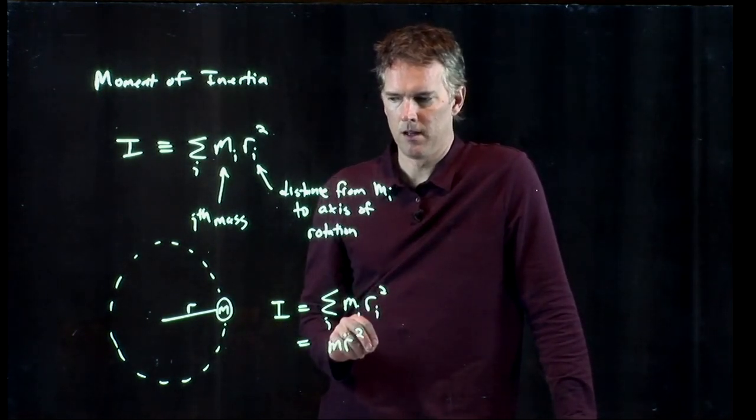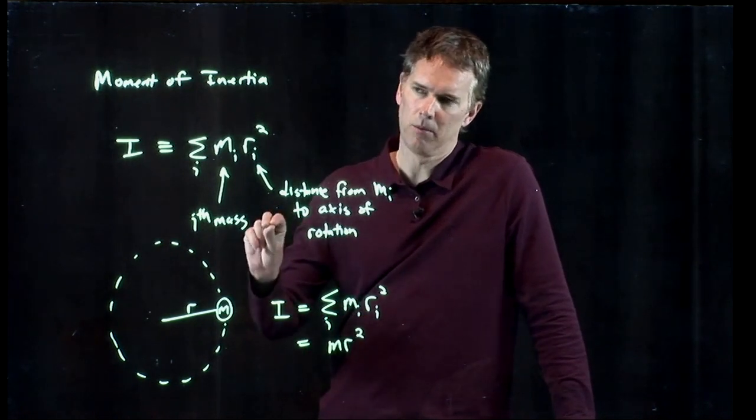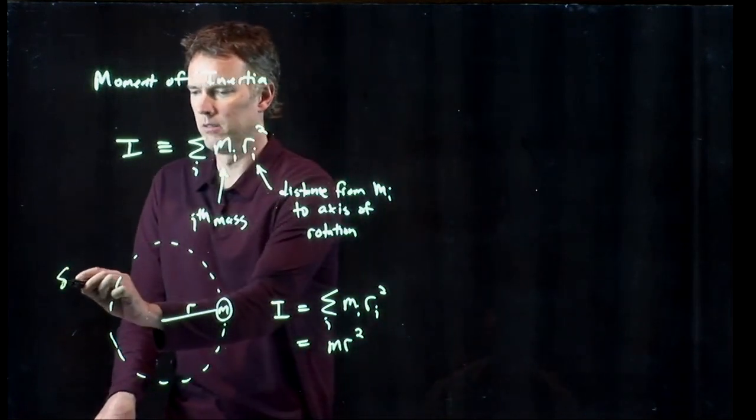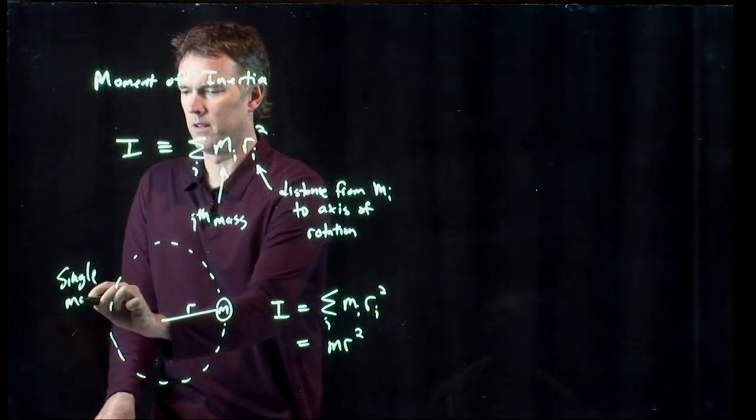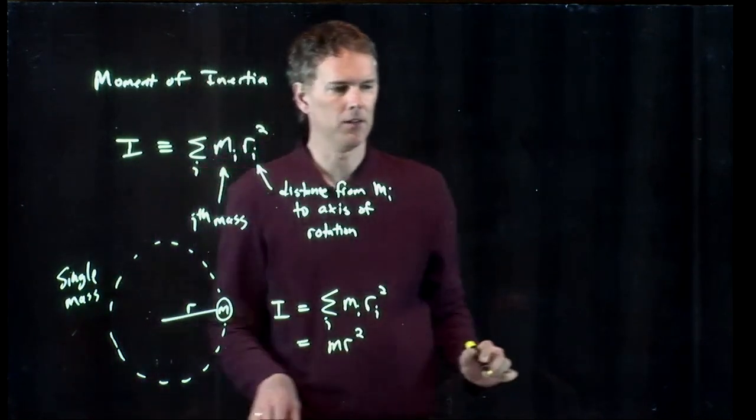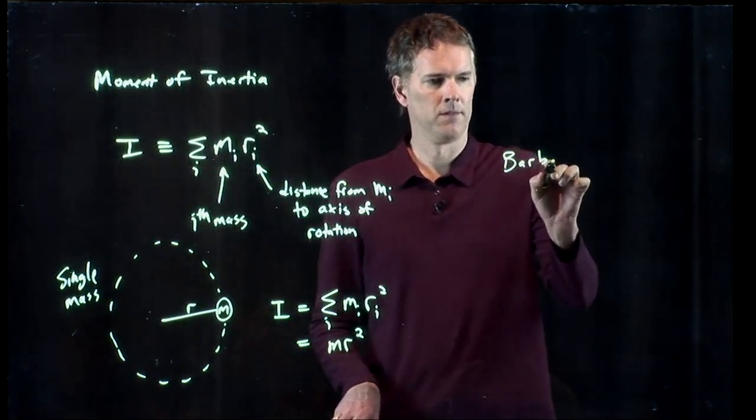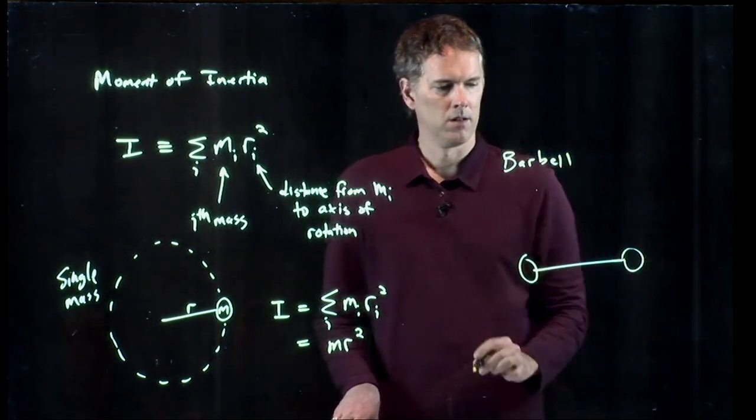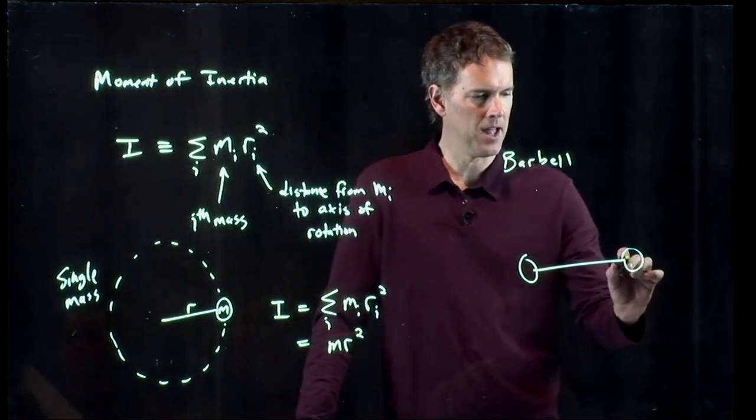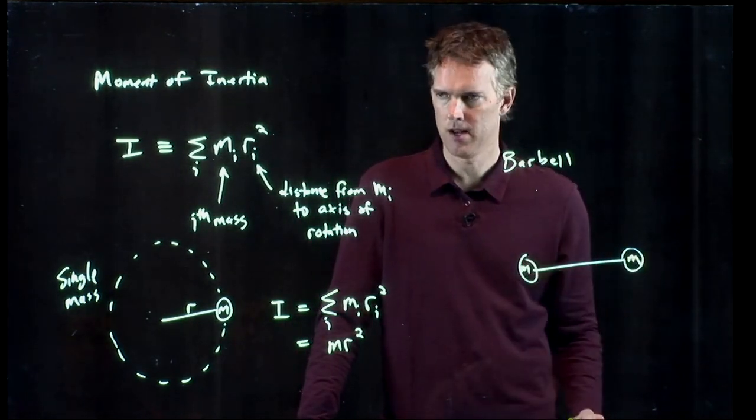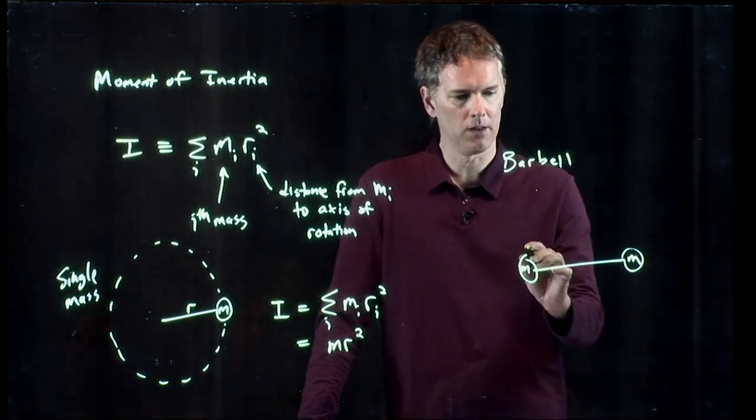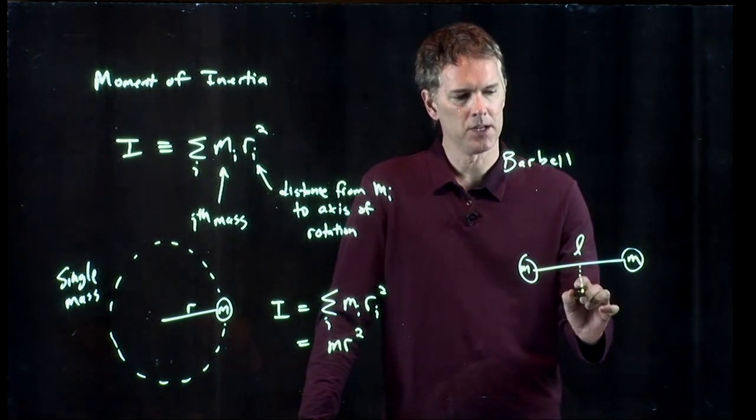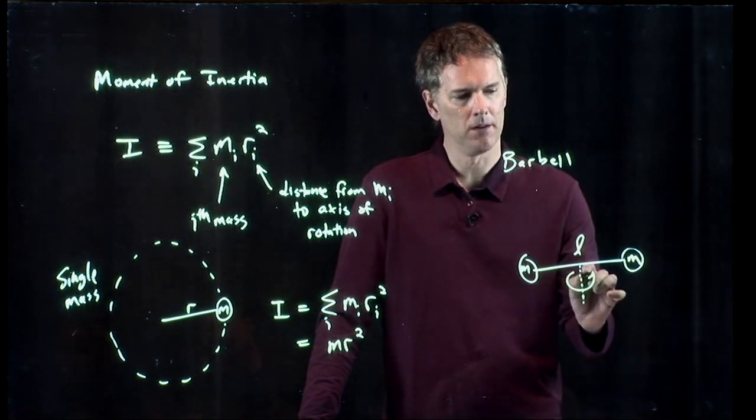Okay, but let's say we add a little bit more stuff to it. Let's say instead of a single mass, let's do a double mass like in a barbell. Okay, so a barbell looks like this. We've got mass m at one end, mass m at the other end. The whole length of the barbell is l and this is our axis of rotation. We'll spin it about the center.